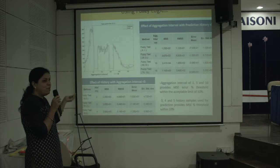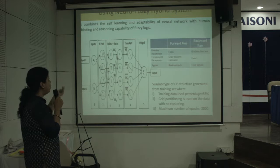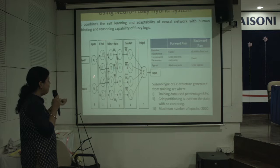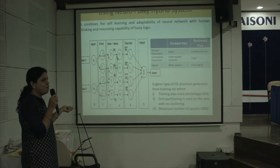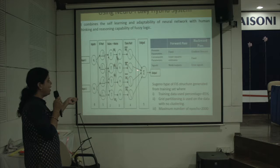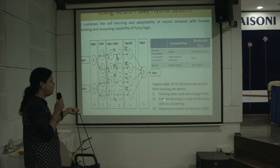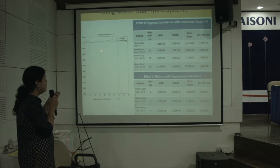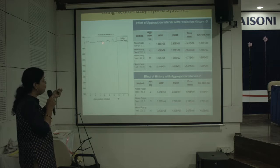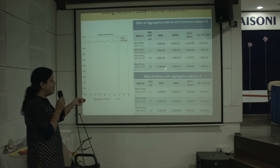The neuro-fuzzy hybrid system combines self-learning and adaptability with the human reasoning capability of fuzzy logic. The fuzzy neural network is functionally equivalent to a fuzzy inference model with layers: fuzzification, fuzzy rule, defuzzification, output membership, and output. A Sugeno-type FIS structure is generated from the training set. The prediction result for neuro-fuzzy test data shows the forecasted count nearly follows the actual count at all points, except for some outliers beyond the normal range. Performance measures are calculated for different aggregation intervals and history samples.